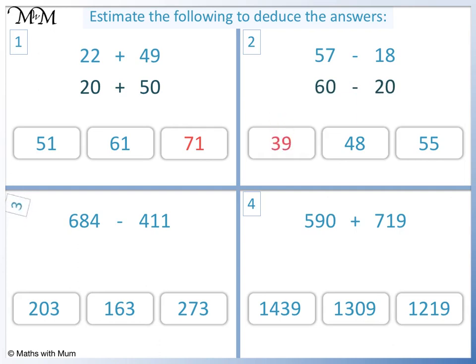Question 3. 684 rounds to 700 and 411 rounds to 400. 700 take away 400 equals 300. The closest answer to 300 is 273.